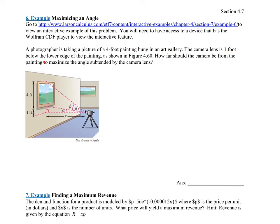It says the camera lens is 1-foot below the lower edge. So here's the camera lens, and that's 1-foot below the lower edge. It says how far should the camera be from the painting — that's this distance here, which they're calling X — to maximize the angle subtended by the camera lens. So what they're saying is to maximize this angle right here, beta, which is the angle that covers the actual picture itself. So they're looking to maximize: what's the distance X to maximize beta?